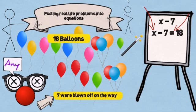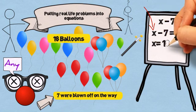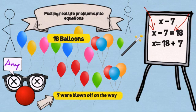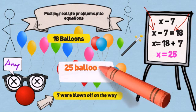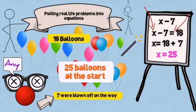Using a bit of mathematical magic, we can now say X equals 18 plus 7, or X is equal to 25. 25 is the number of balloons the clown had in the beginning.